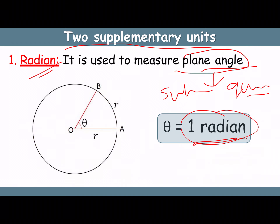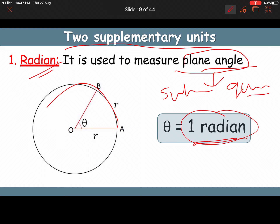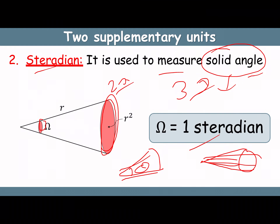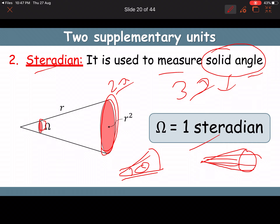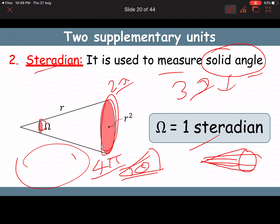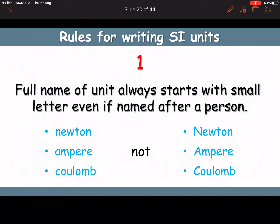The second supplementary quantity is solid angle, and its unit is steradian. A plane angle is a 2D angle; a solid angle is a 3D angle. The maximum value of solid angle for a complete sphere is 4π steradian. The solid angle is defined as the angle at the center of a sphere subtended by its surface area.